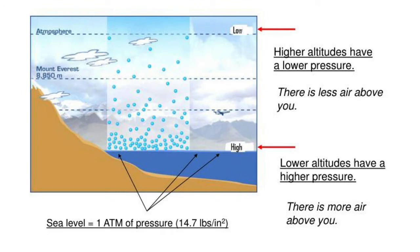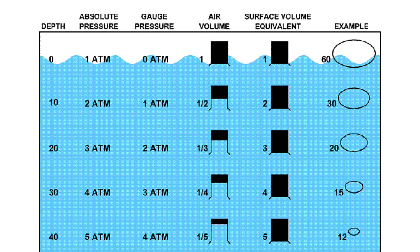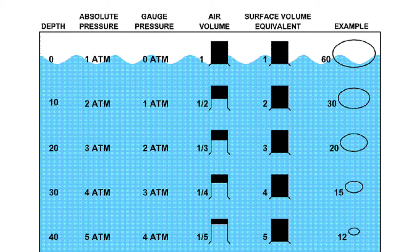Higher altitudes have lower atmospheric pressure because there's less air above you. At sea level the maximum atmospheric pressure is one atm. As you enter the water and dive, pressure increases one atmosphere for every 10 meters or 33 feet. At the sea surface, absolute pressure is one atm — atmospheric pressure of one atm plus hydrostatic pressure of zero atm. As you dive down, hydrostatic pressure increases incrementally.